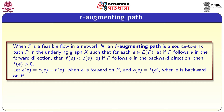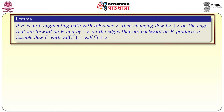If we have an augmenting path, we define ε(e) equal to c(e) minus f(e) when e is forward on P, and ε(e) equal to f(e) when e is backward on P. The tolerance of path P is defined as the minimum over all edges e in P of ε(e). The lemma states: if P is an augmenting path with tolerance z, then changing the flow by plus z on forward edges and by minus z on backward edges produces a feasible flow f' with value val(f') equal to val(f) plus z.